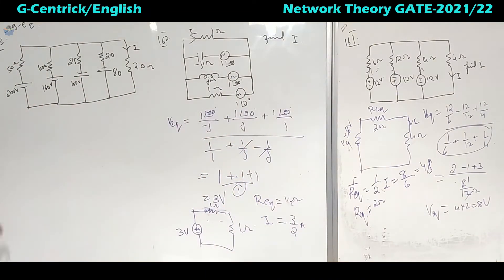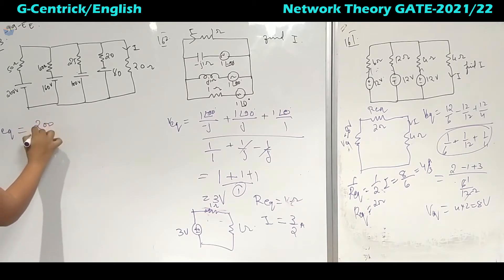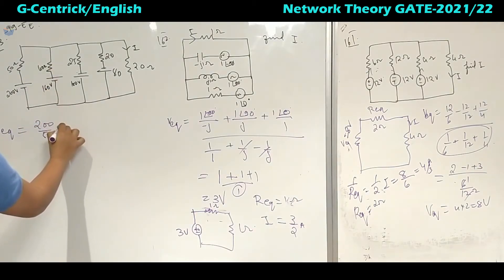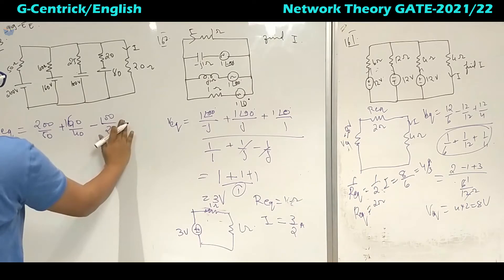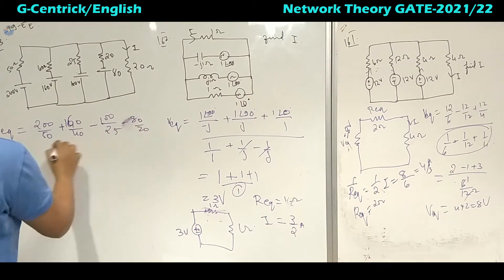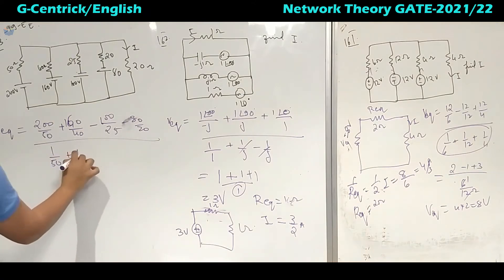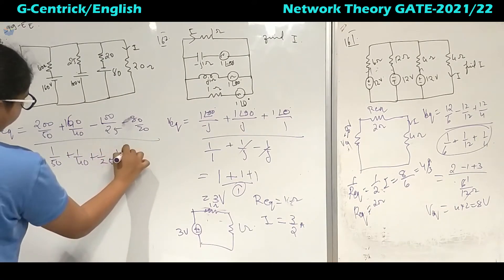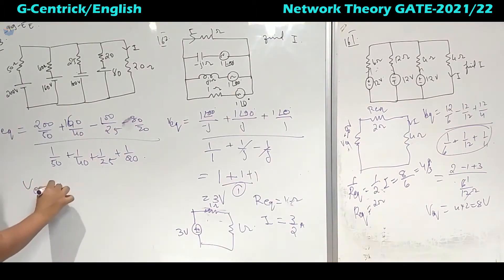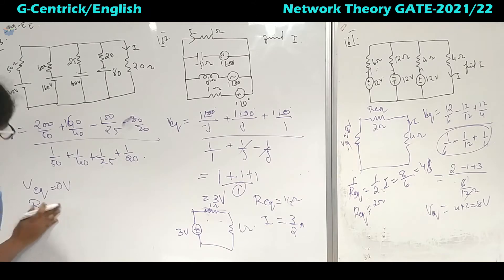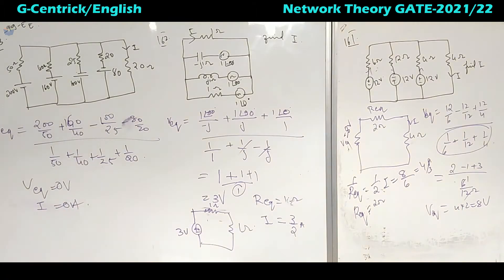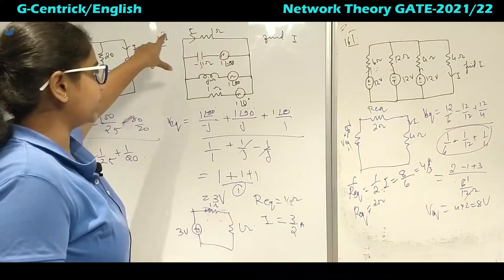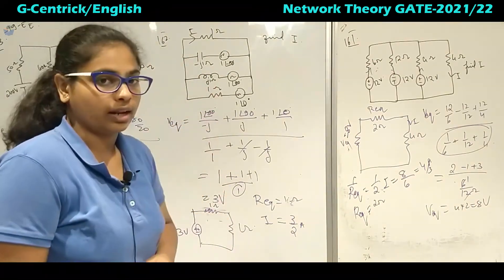This next problem was asked in GATE 2019 for the electrical branch. Applying Millman's theorem: V_eq = (200/50 + 160/40 − 100/25 − 80/20) divided by (1/50 + 1/40 + 1/25 + 1/20). Solving this gives V_eq = 0 volts. When V_eq is 0, the current I is also 0 amperes. Millman's theorem is much faster than nodal analysis for this type of problem.